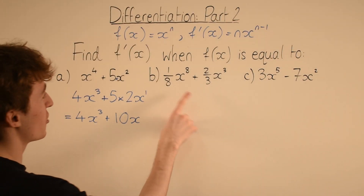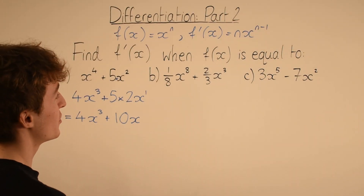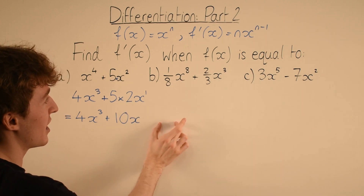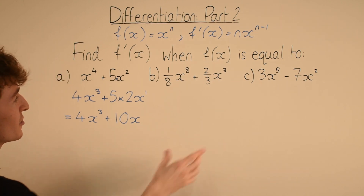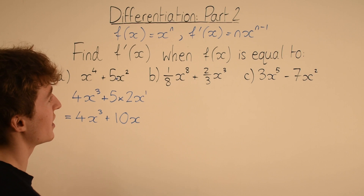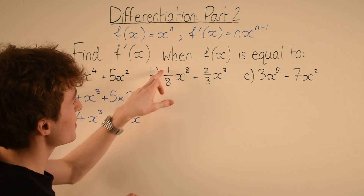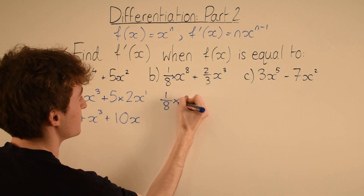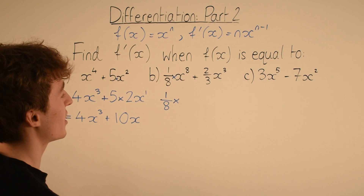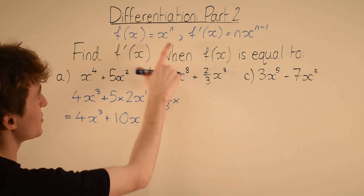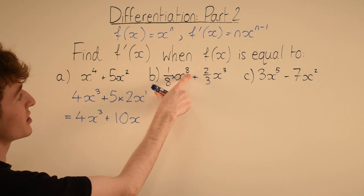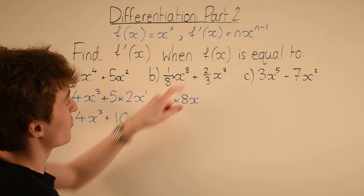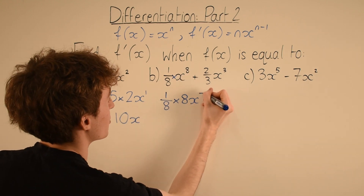The second example has fractional coefficients, but it works in exactly the same way. Focusing on the first term: one eighth x to the power of 8 really means one eighth multiplied by x to the power of 8. We write one eighth times, then differentiate x to the 8 — n is 8, so we bring the 8 down in front to get 8x, and subtract 1 from the power: 8 minus 1 is 7.